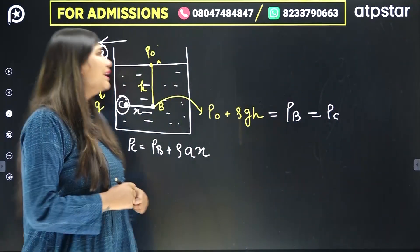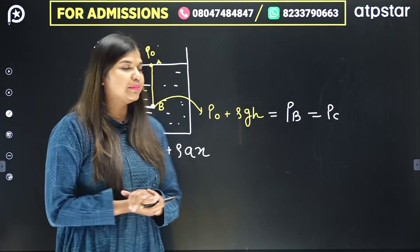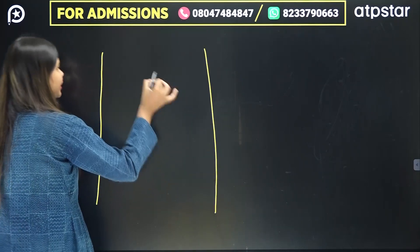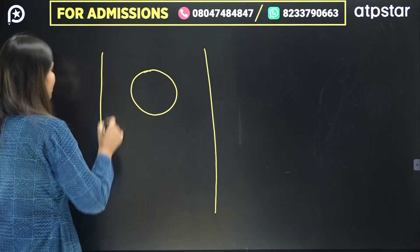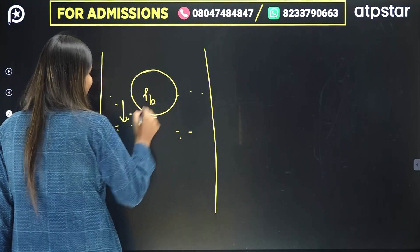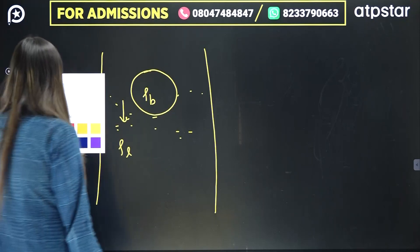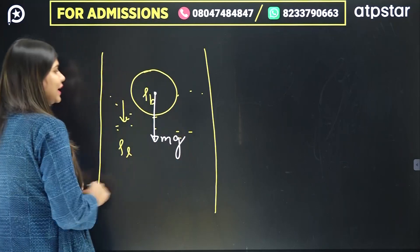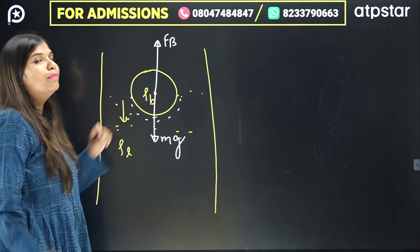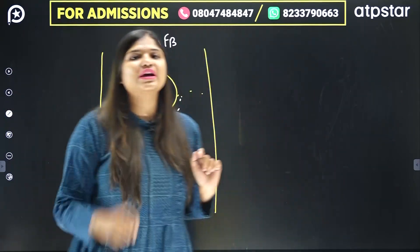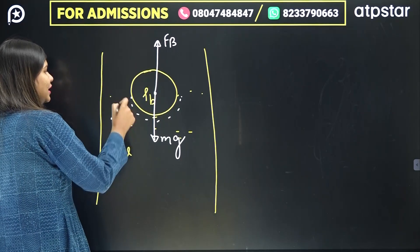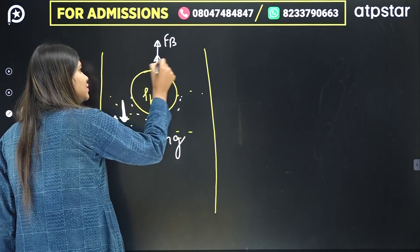Now we will talk about the viscous force. If there is a container and a spherical or solid ball is sinking in the fluid with velocity V, which forces act? We have density of ball and density of liquid. The forces are: Mg downward, buoyant force (upthrust) FB upward. Now we have to decide the viscous force direction — if the ball moves in this direction, the viscous force acts in the opposite direction.